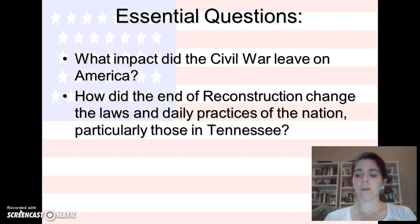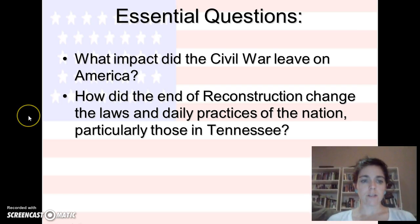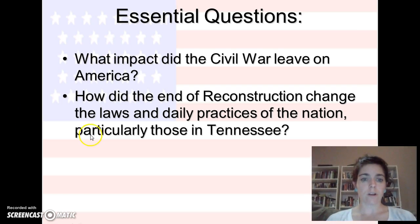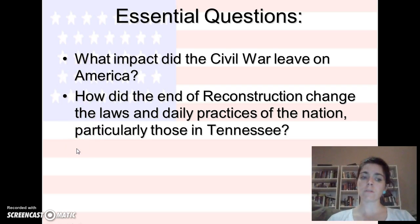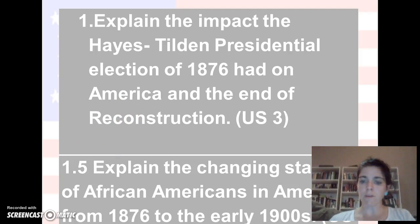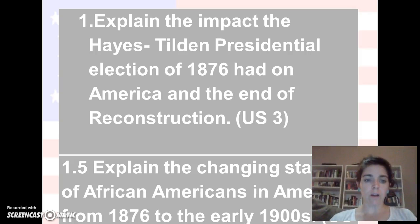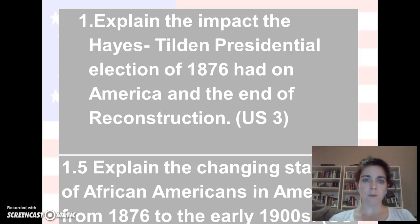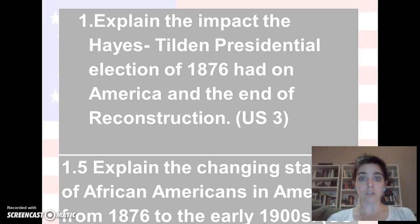Hey guys, it's Ms. Binion here for your flip video number two on Reconstruction. If you look at your C notes from last time, we covered two of these essential questions, and we're still covering those. Let's go on to our learning targets. We're still explaining the changing status of African Americans in America from 1876 to the early 1900s. On your C notes, you're going to put learning target 1.5, and we are going to cover learning target 1.4: explain the impact of the Hayes-Tilden presidential election and how it ended Reconstruction.